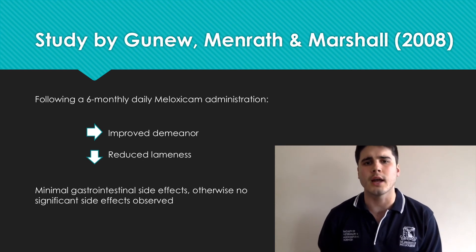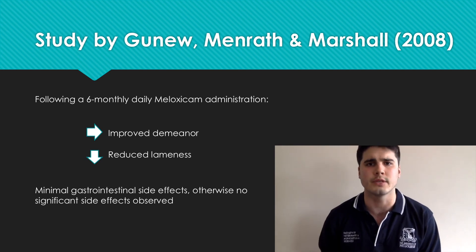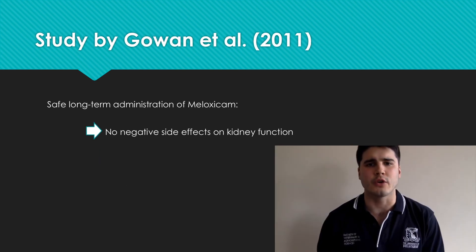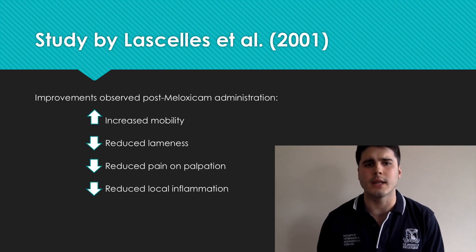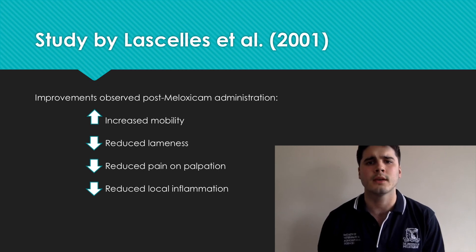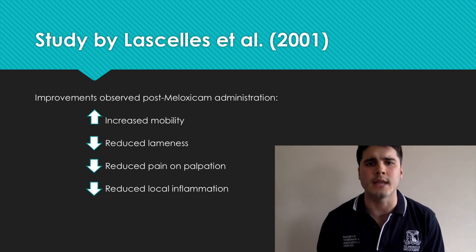The study also highlighted that apart from gastrointestinal side effects, there were no other deleterious effects of long-term meloxicam use. A retrospective case control study by Gowen et al further highlighted the safety of long-term meloxicam administration by revealing that it does not have negative effects on kidney function. Finally, the experimental study by Laisels et al further included pain on palpation and local inflammation as measurement tools when evaluating the efficacy of daily meloxicam administration, with meloxicam found to reduce both these parameters in addition to lameness and mobility.